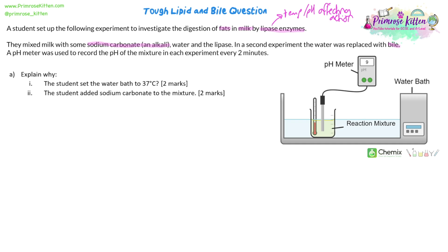Sodium carbonate is an alkali — they told us that, but just knowing that sodium carbonate, like sodium hydroxide, is an alkali is worth knowing in case the question doesn't tell you. We're using bile, so thinking about what I know about bile: it helps to digest fats and it's released from the liver. We're using a pH meter, and they're going to record that pH every two minutes — a quantitative measurement over a set amount of time.